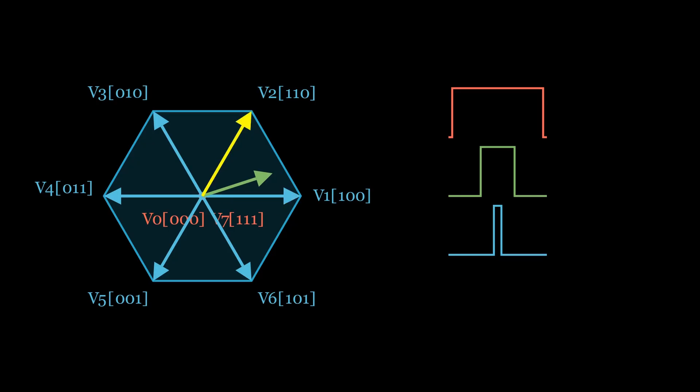After a 60-degree rotation, we will see a smooth and symmetrical PWM pattern, which creates a smoothly rotating magnetic field inside the motor.